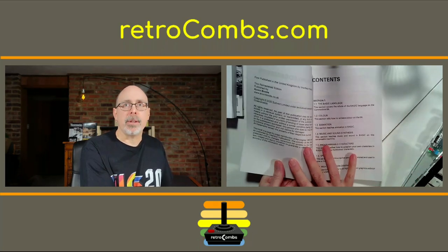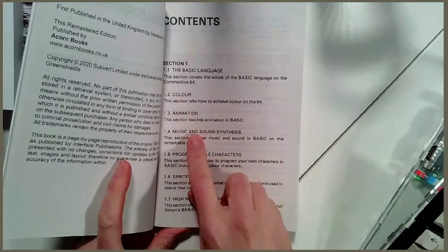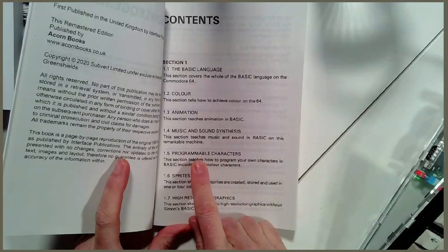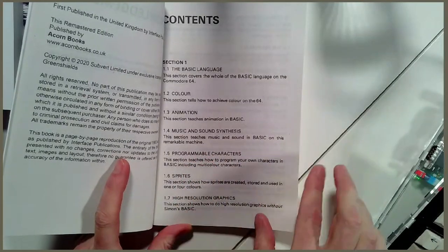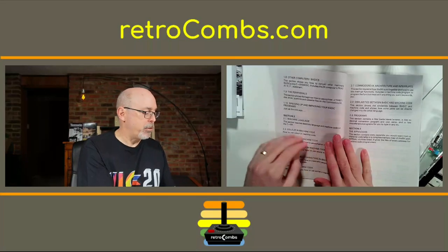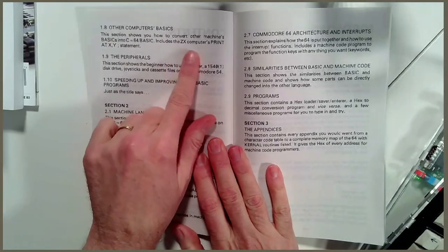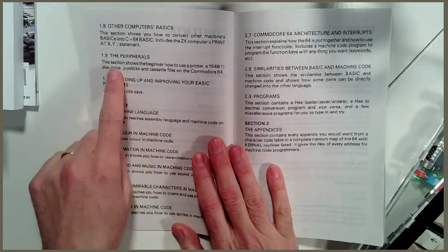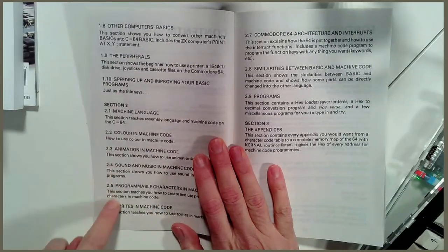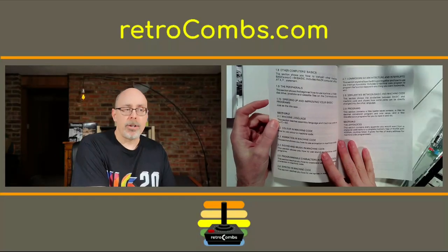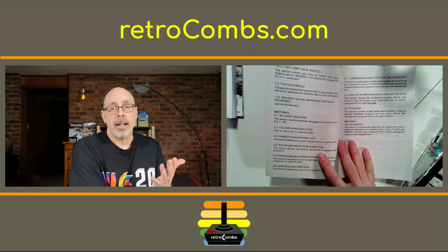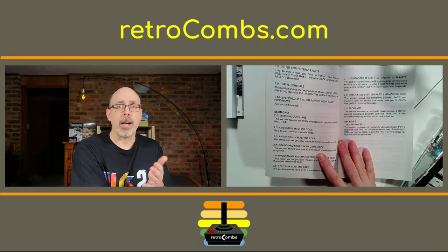If we look in here we can see the contents: BASIC language, color, animation, how to create animation in BASIC, music and sound synthesis, programmable characters, sprites, high resolution graphics — that should be kind of interesting. Other computer BASICs are covered too, so if you're converting from a ZX Spectrum or Timex Sinclair as they were known in the United States, you'll have that. There's also a section on peripherals, speeding up and improving your BASIC programs.